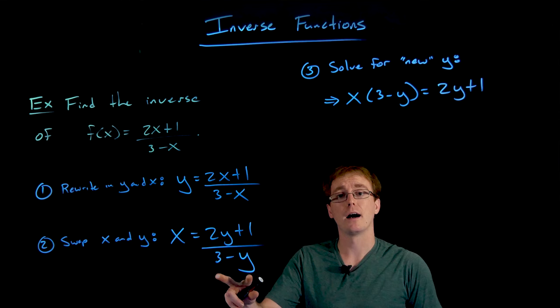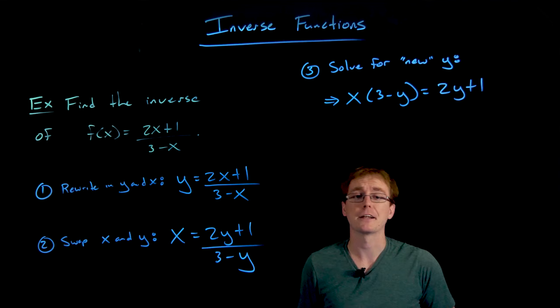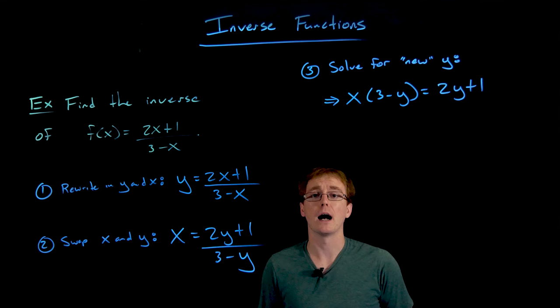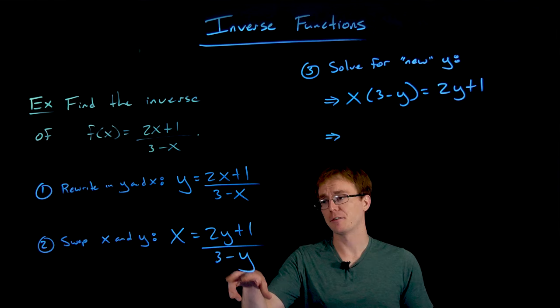But when we multiply the right-hand side by 3 minus y, it's going to cancel that factor of 3 minus y out from the denominator, leaving us just that numerator 2y plus 1. So that helps us get rid of that issue of having y's in both the numerator and the denominator.